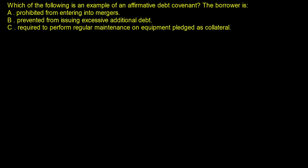Prohibited from entering into mergers — that could be in a debt covenant, but entering into mergers is a risky business generally speaking, so this is actually considered a negative covenant right here. Prevented from issuing excessive additional debt — as somebody that is owed money, you don't want to see the company adding more debt to their balance sheet. That's a negative covenant; it restricts them from something they would possibly do to grow. It's a restrictive covenant, so it's a negative covenant.